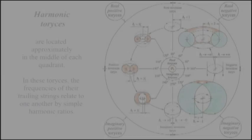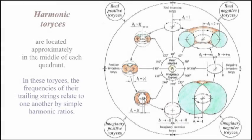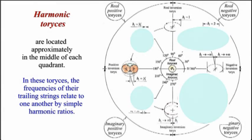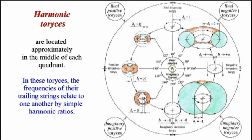These Toreases are located approximately in the middle of each quadrant, and the frequencies of their trailing strings relate to one another by simple harmonic ratios.